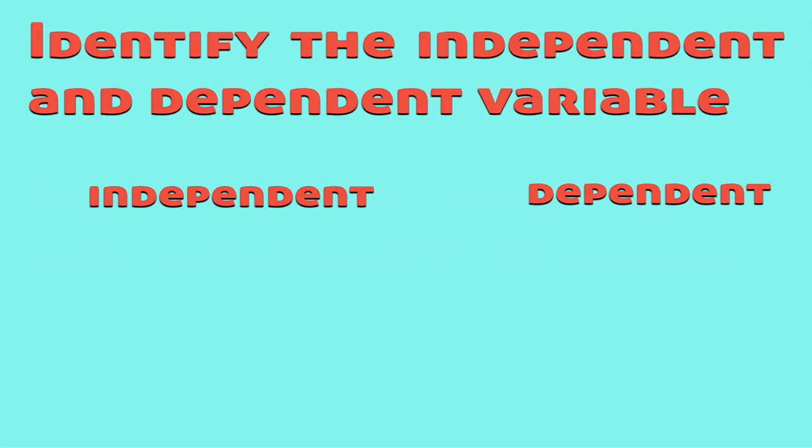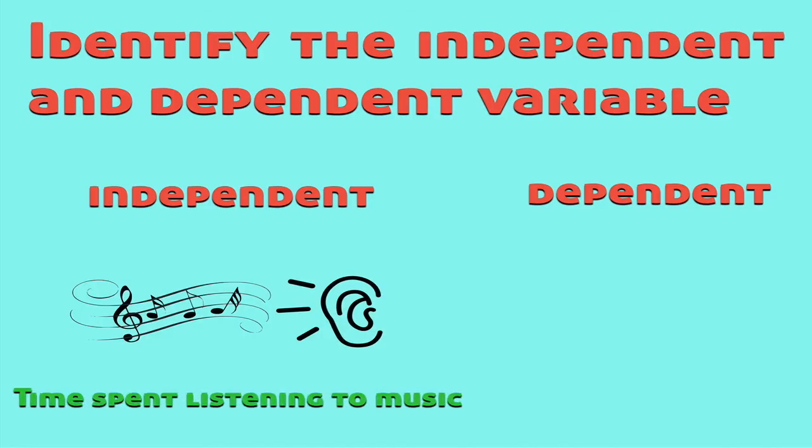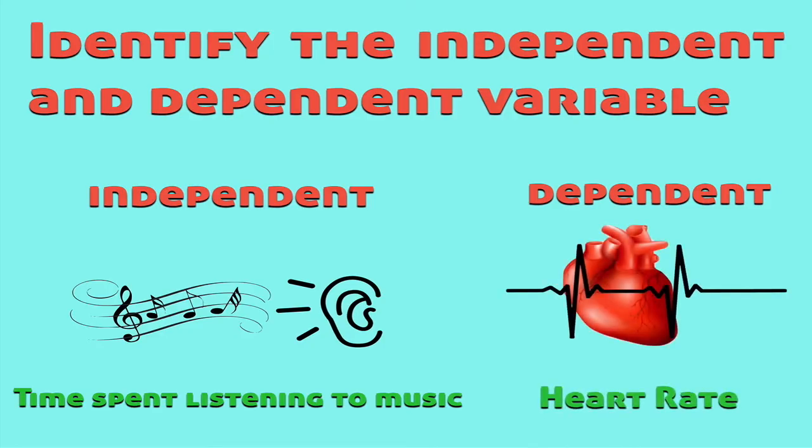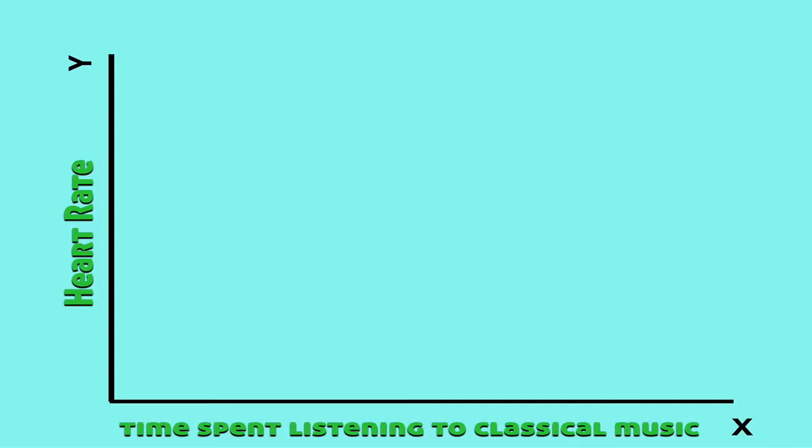Let's again identify the independent and the dependent variable in this situation. Our independent variable is going to be the time spent listening to music because we're selecting one group to listen and one group to not. The dependent variable is the heart rate because that, according to the researcher, is going to depend on how much classical music they hear. Putting those two variables on an axis will look like this. Time spent listening to classical music would be on the bottom while the heart rate would be on the side.